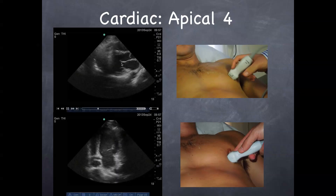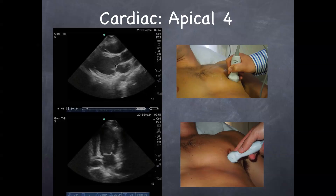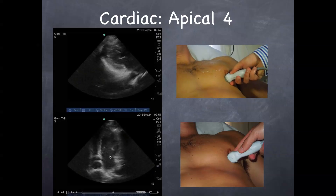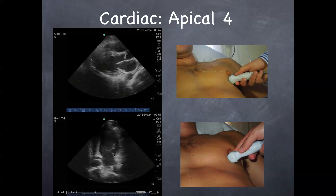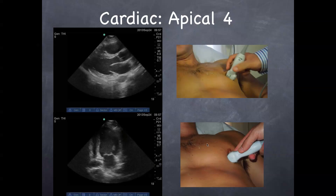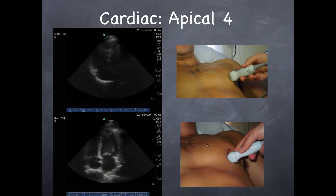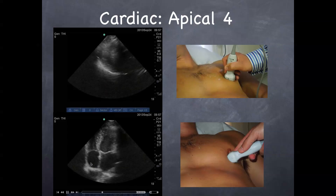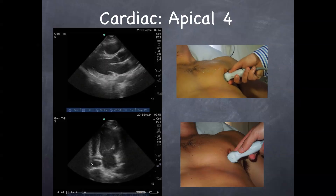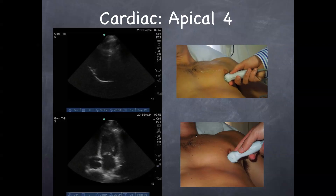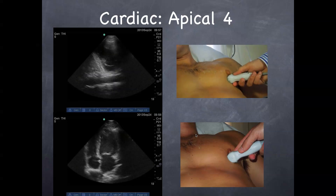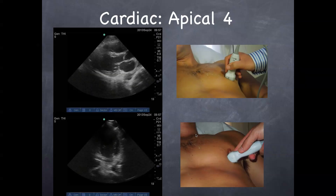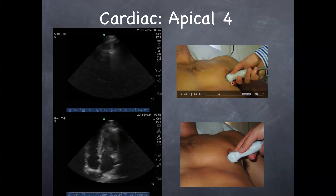Here's your apical four-chamber. The way I get this is I go from a long axis view, then move my probe right underneath the nipple and point it to the right of the patient — that will generally give you this nice view of the heart. The goal is to get both valves — the mitral valve and the tricuspid valve — in view. It looks like a four-square game. You'll have both ventricles and both atria in your view. Tricks include moving the patient's left arm above their head and having them roll slightly to the left, which brings the heart closer to the surface.